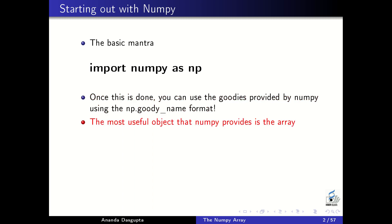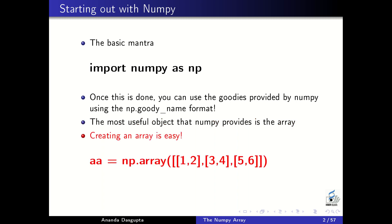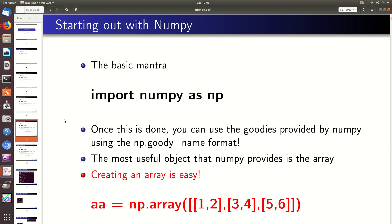Once you import NumPy as np, all the goodies that NumPy gives you are available. All you have to do is say np followed by a dot and then give the name of whatever you want. The most useful object in NumPy is the array and that's the one we are going to focus on in this lecture. Creating a NumPy array is really very easy — let me give you a live demo.